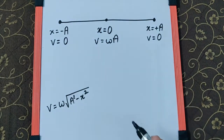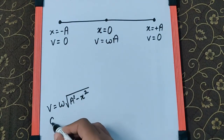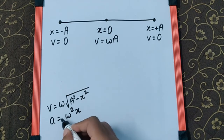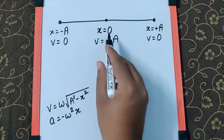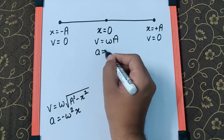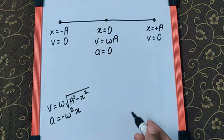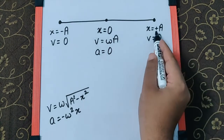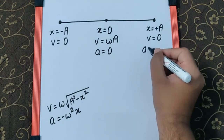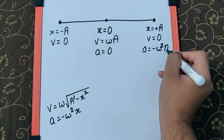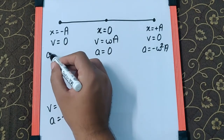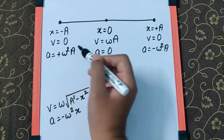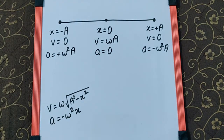For acceleration, the formula is a = -ω²x. When we put x = 0, acceleration is zero, meaning at the mean position the acceleration is zero. At the positive extreme x = +a, acceleration is -ω²a, and at x = -a, it is +ω²a — exactly opposite to the displacement.